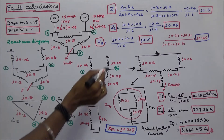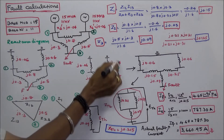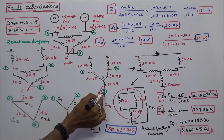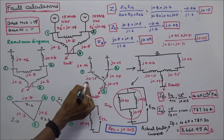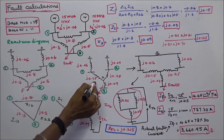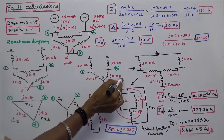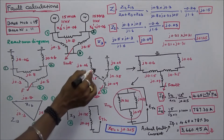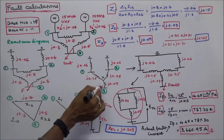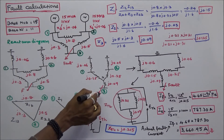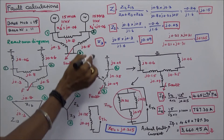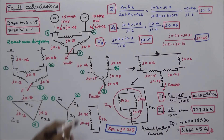Now I will redraw the circuit. The buses are labeled 1, 2, and 3. The star equivalent values are: Z1 equals J0.15, Z2 equals J0.25, and Z3 equals J0.09. I can now easily calculate the total reactance from bus 3 to the neutral point.